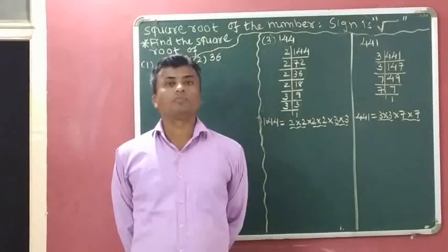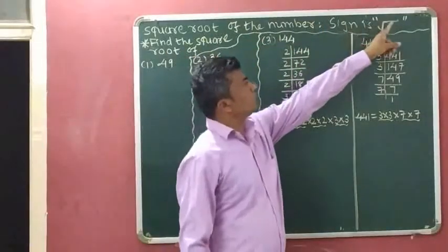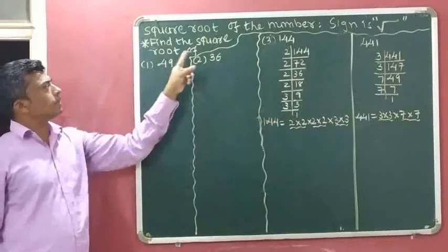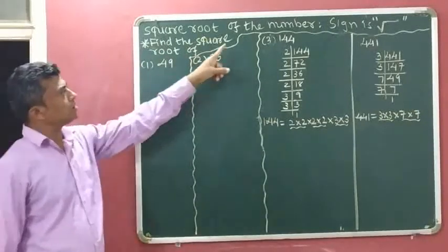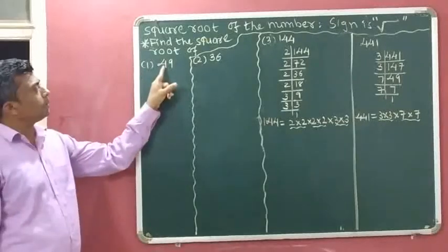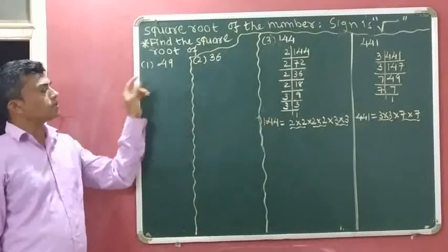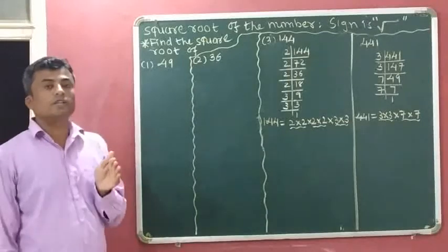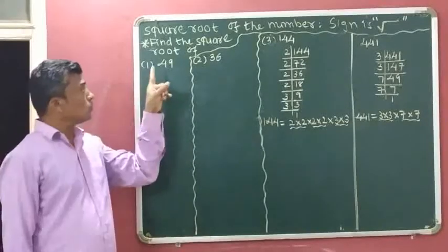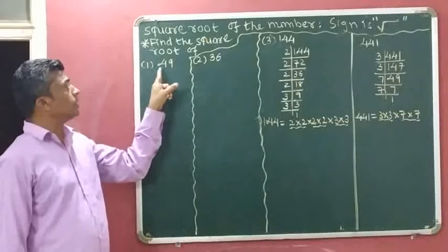Now we will discuss square root of a number. This is the sign of the square root. Our question is to find the square root of the given numbers: 49, 36, 144, and 441. First, we will identify the square root of 49 using the normal method. Which two same digits can we multiply to get 49? 7 times 7 is 49, so the square root of 49 is 7.